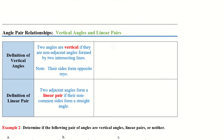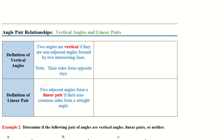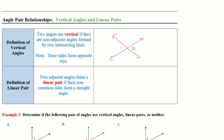Definition of vertical angles: two angles are vertical if they are non-adjacent angles formed by two intersecting lines. Note their sides form opposite rays. Looking at this picture, these two angles are vertical angles — they're right across from one another. They aren't adjacent angles, so they don't have any common rays between the two of them.